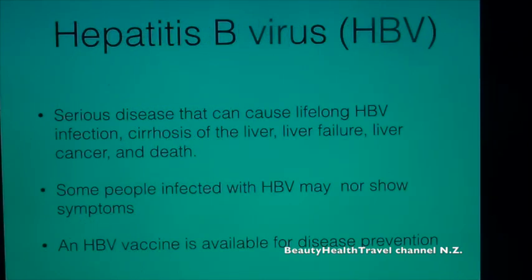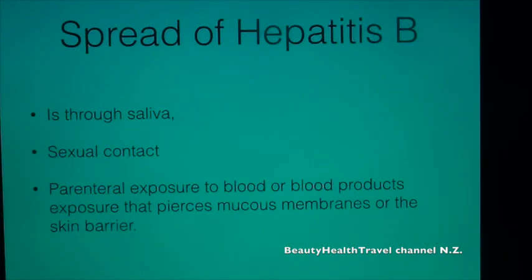Hepatitis B virus (HBV) is a serious disease that can cause lifelong HBV infection, cirrhosis of the liver, liver failure, liver cancer, and death. Some people infected with HBV may not show symptoms. An HBV vaccine is available for disease prevention. Spread of Hepatitis B is through saliva, sexual contact, and parenteral exposure to blood or blood products — exposure that pierces mucous membrane or the skin barrier.